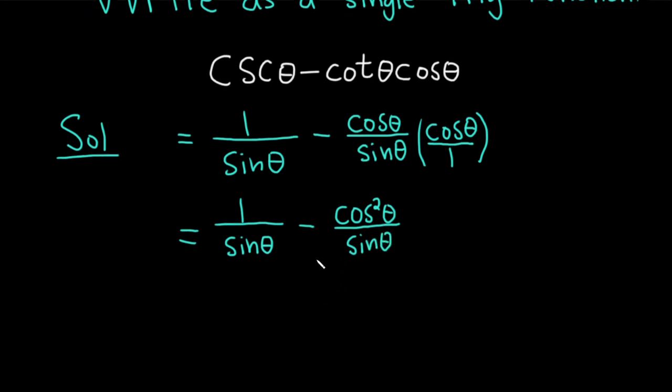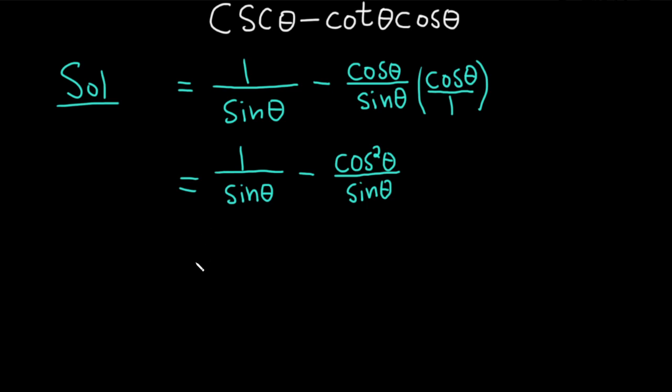Now we have a common denominator, so we can subtract. This is equal to 1 minus cosine squared in the numerator, and in the denominator we just get the sine of theta.